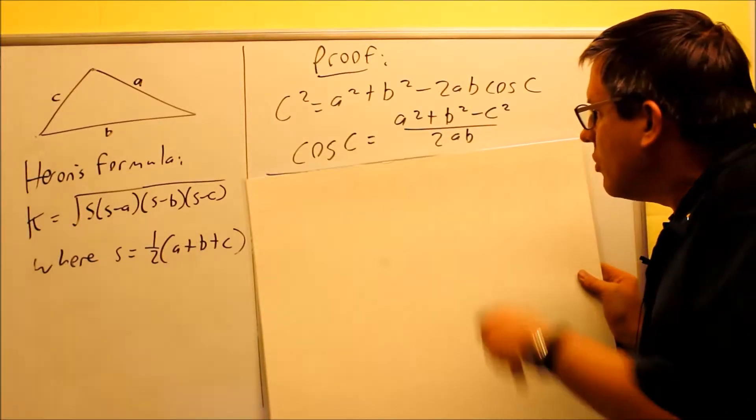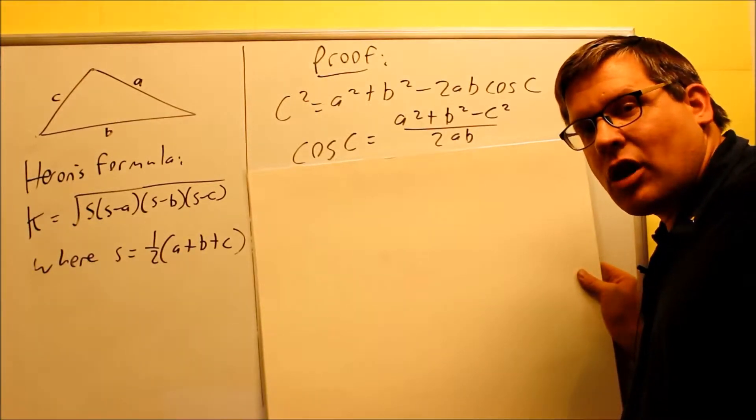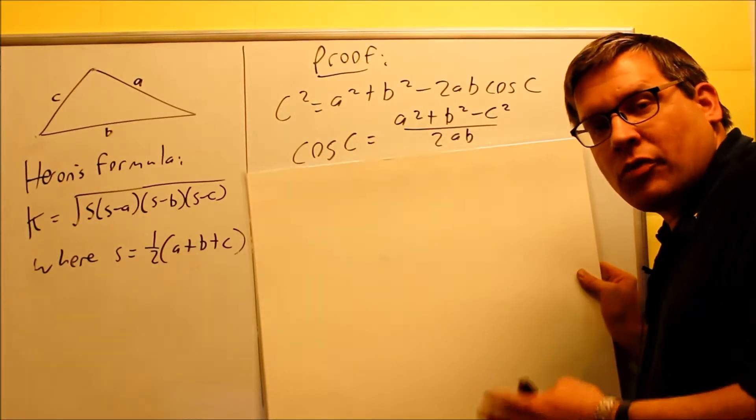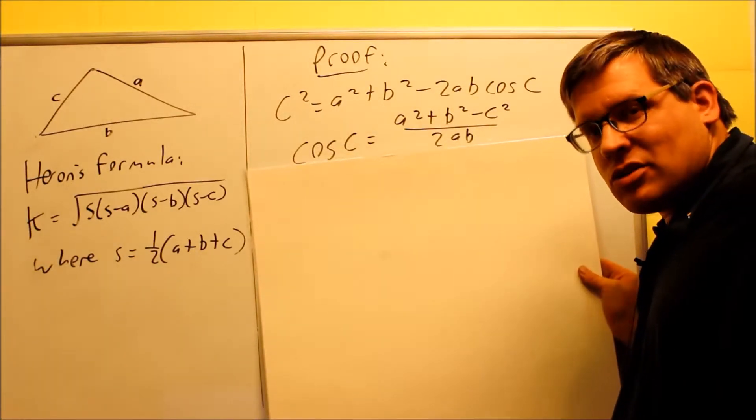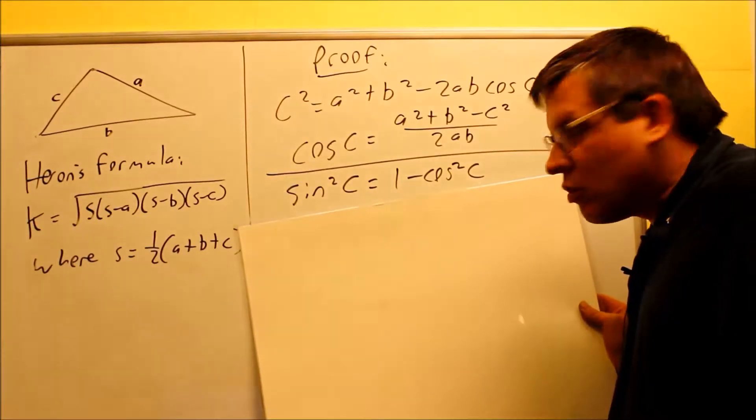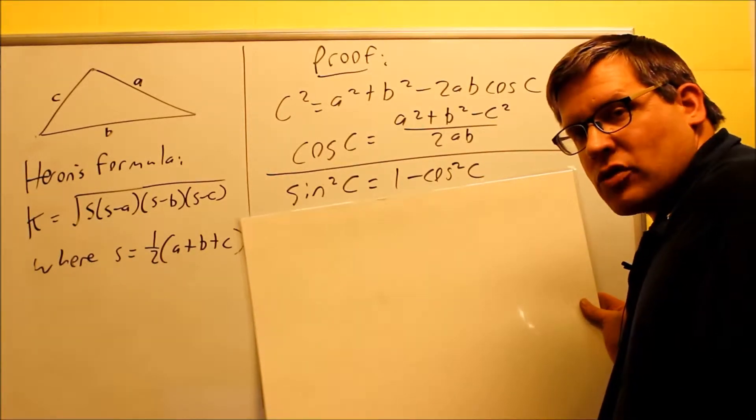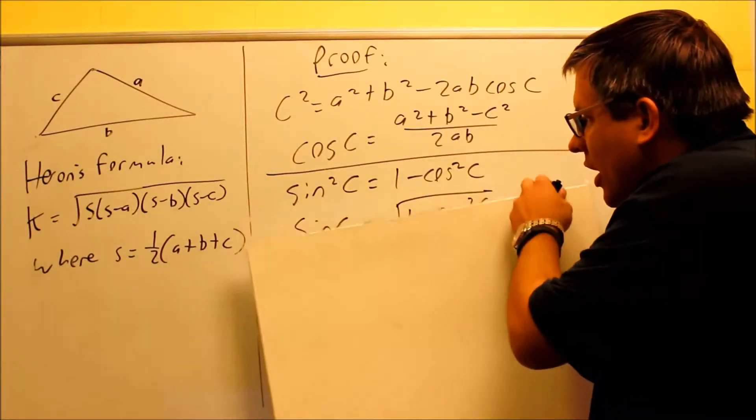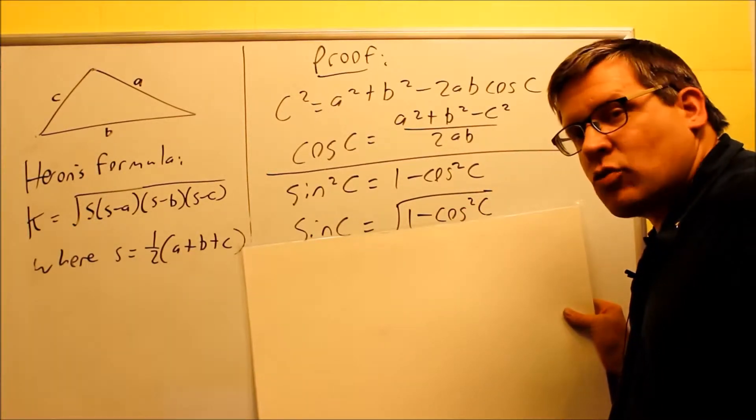We get cosine c is equal to this right here. Now, the previous formulas that we looked at in this section so far all involved sine. We actually derived those by using right triangles, all of them involve sine. So I need to somehow be able to turn this cosine into a sine. In order to do that, we need to use an identity. We're going to use this one: sine squared equals 1 minus cosine squared. So we're going to use that identity right there, and I'm going to solve for sine by square rooting both sides. So I square root both sides, and then this is the next place we get to here.